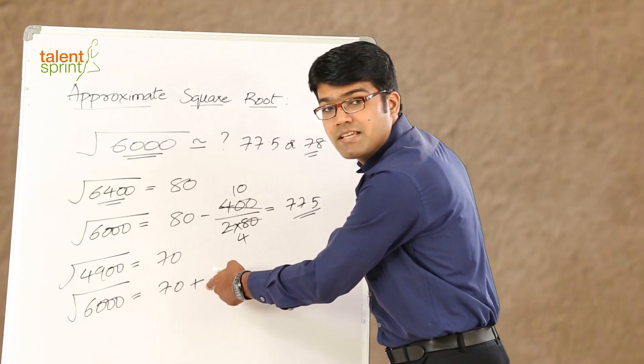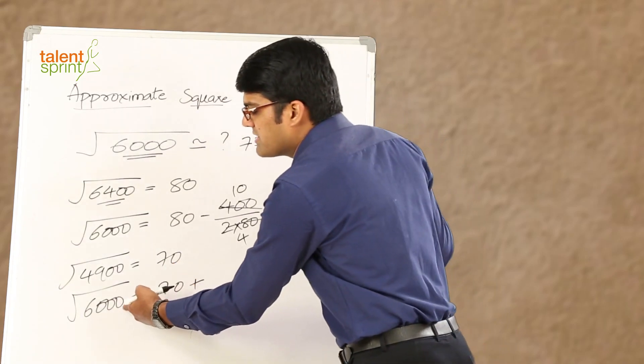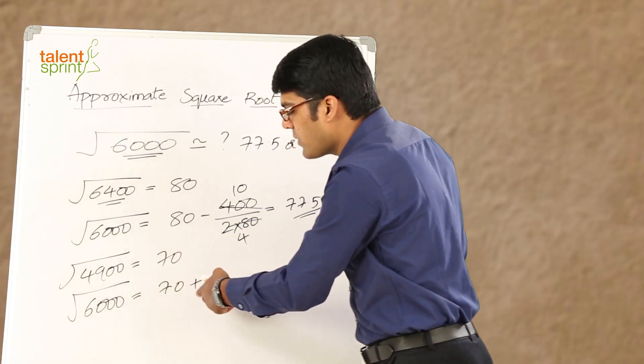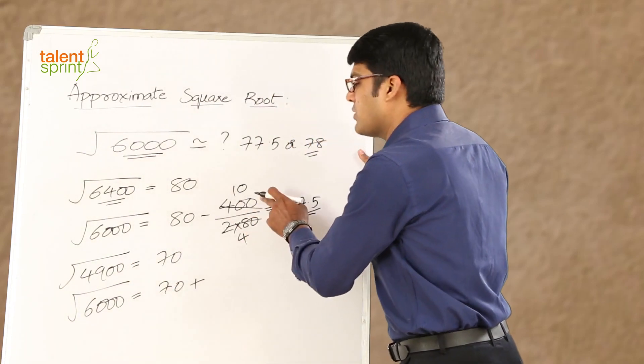So, we can say square root of 6,000 will be equal to 70 plus. Now, I need not explain you why we are taking plus this time. Because the number 6,000 is more than 4,900. So, its square root should be more than 70. 70 plus what? The same concept.